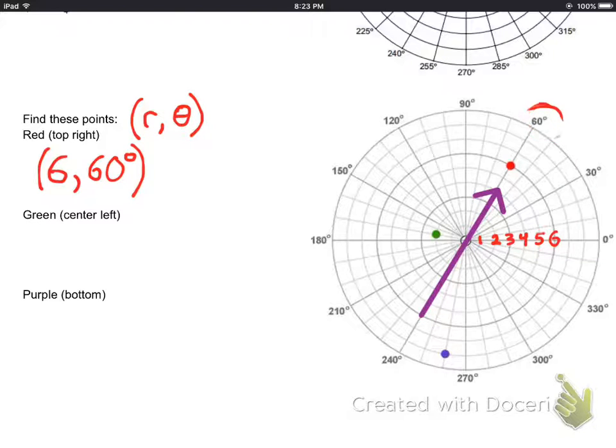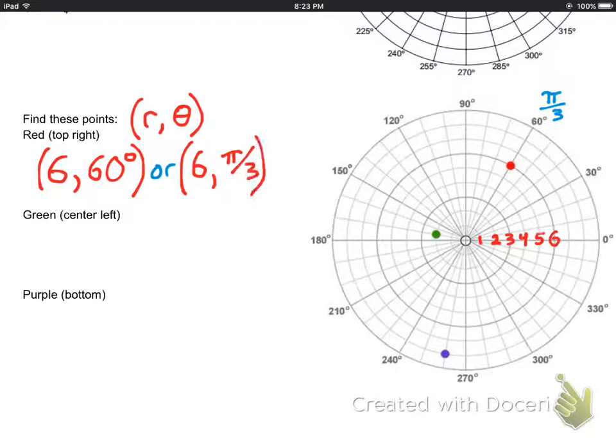So the point 6, 60 degrees is that point up there in the top right, and that's how we find it. It's also pi over 3, so you could also write it as 6, pi over 3.